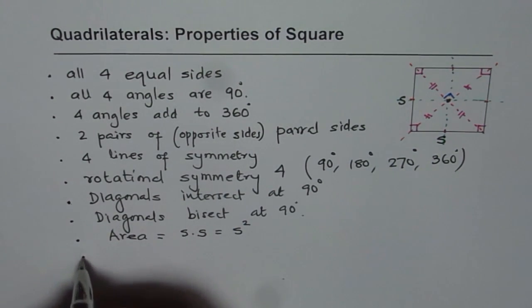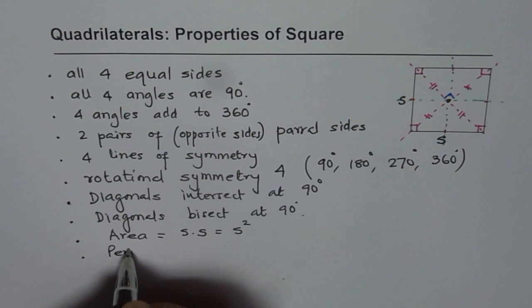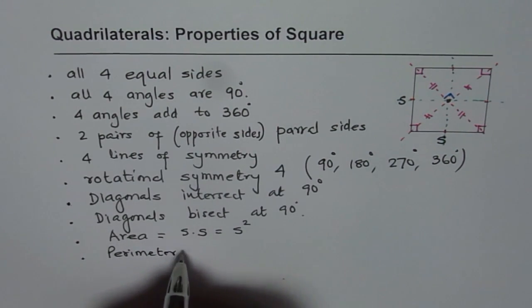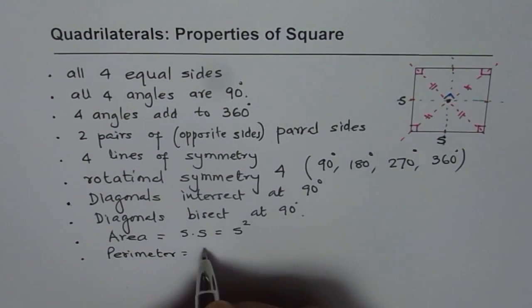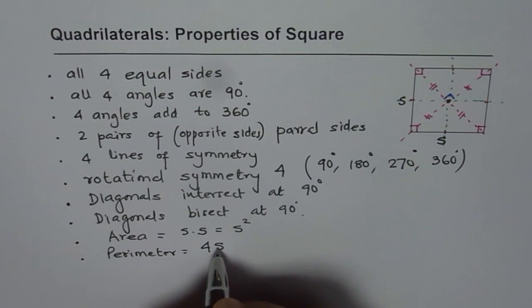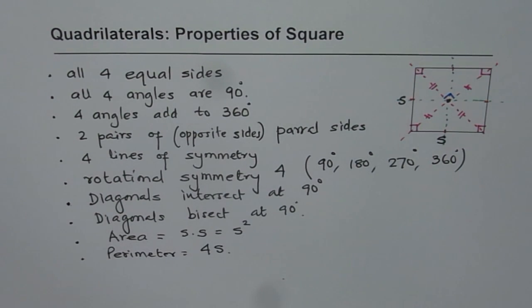And how about the perimeter? Perimeter is sum of four sides, so we can say 4 times S. So, these are a few properties of squares which you should know.